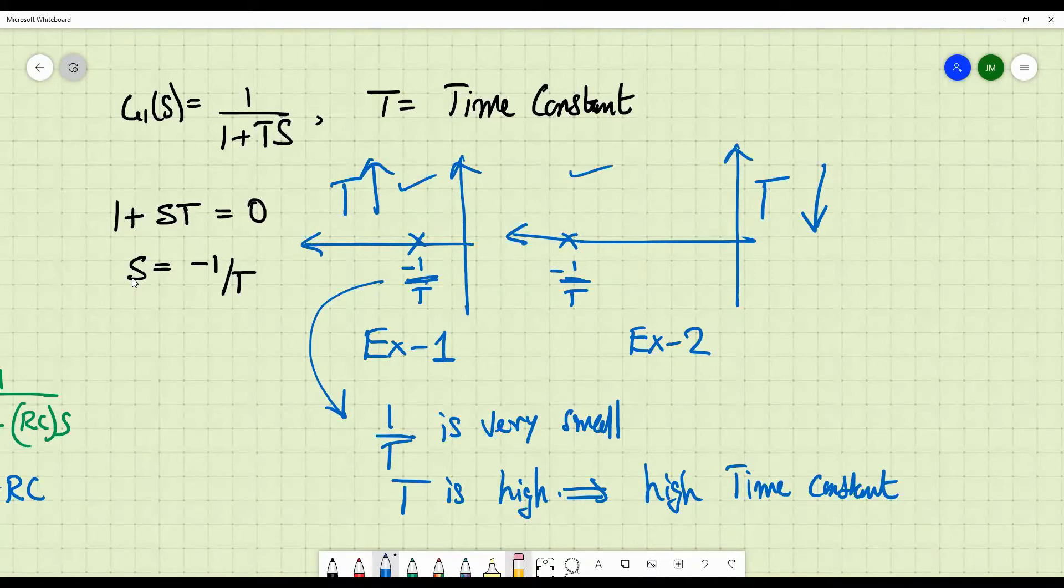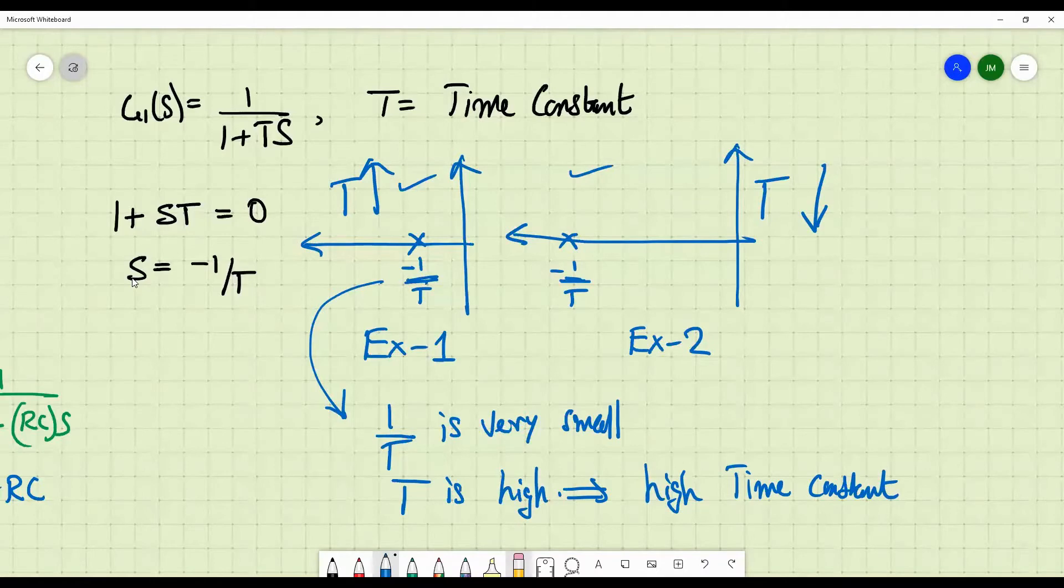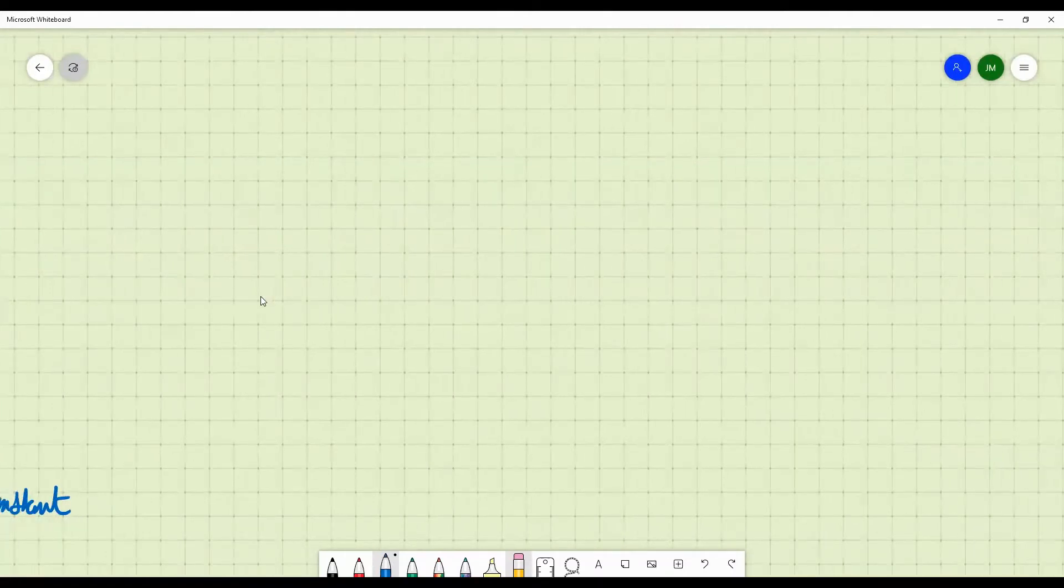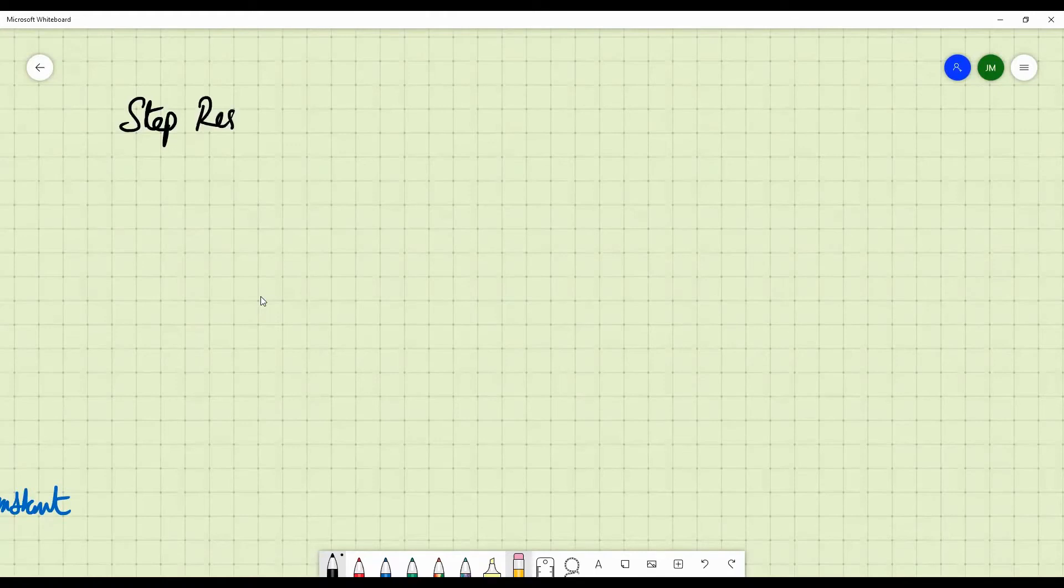And as you push the pole towards the j omega axis, what you are doing is, you are increasing the time constant of the system. So now we have been talking about the time constant for a very long time. Let us see what actually it means. For that, you will have to learn what is the step response of a first order system.